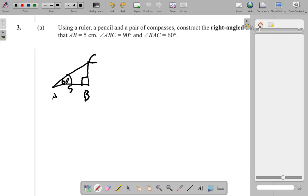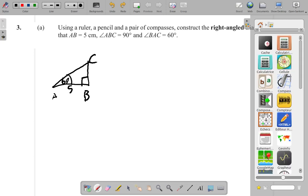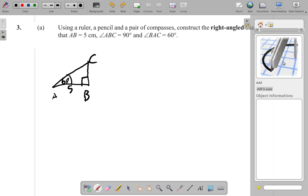What I want is a pair of compasses. I have my compass here. First of all, I need my line AB. So I use my ruler and draw the line AB, being 5 cm.